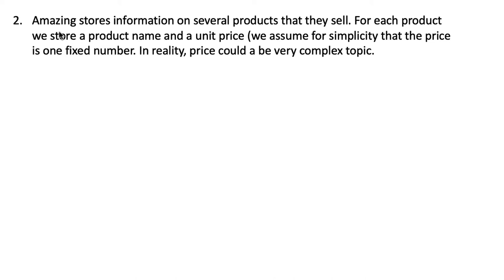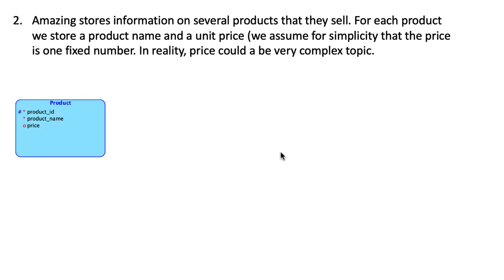The next business statement says that Amazing stores information on several products that they sell. For each product we store a product name and a unit price. So we've got Product ID, Product Name, and Unit Price. We create our next entity type called Product, with Product ID as the primary key. I've made the simplifying assumption that price is optional whereas product name is required.